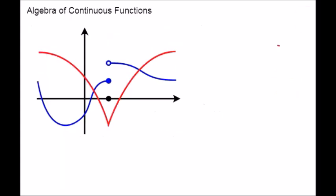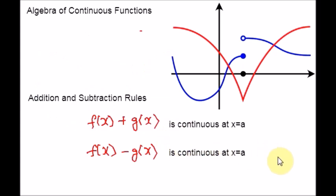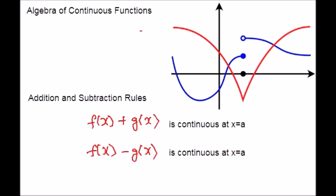Let's start with the video. Suppose f and g are two continuous functions at the point x equal to a. Then we have the following rules. Here are the two important addition and subtraction rules for continuous functions. If you add these two functions f and g, the result should be continuous at the point x equal to a. The same concept applies for subtraction too — f minus g is continuous at the point x equal to a.